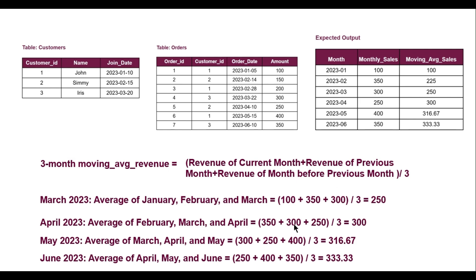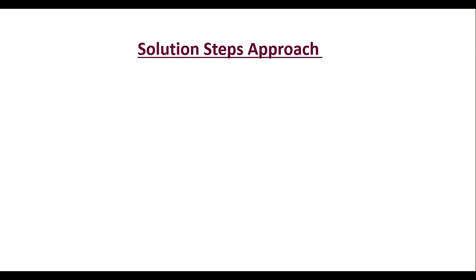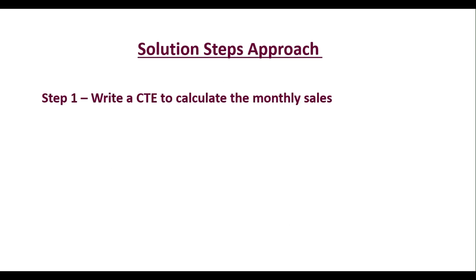Let's move on to writing the SQL query to get this expected output. Here is our approach: Step one is to calculate the monthly sales as we just did. We will write a CTE to calculate the monthly sales. We will use the DATE_FORMAT function on the order_date column to extract just the year and month. Then we will group by this month column and use SUM of amount to get the total sales per month.